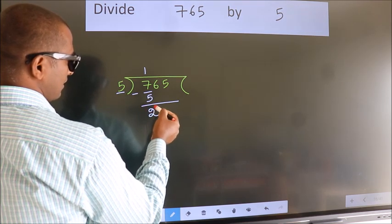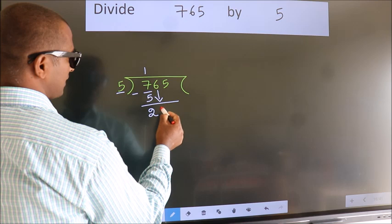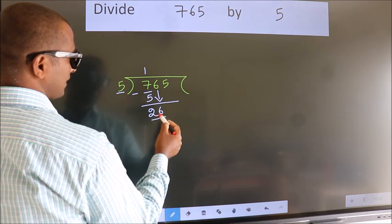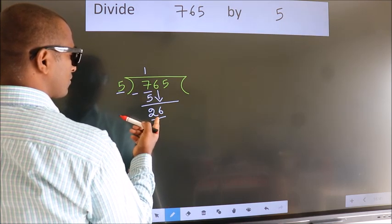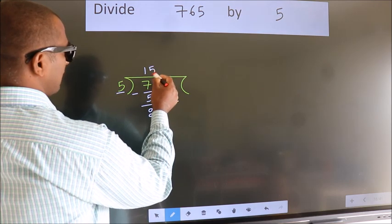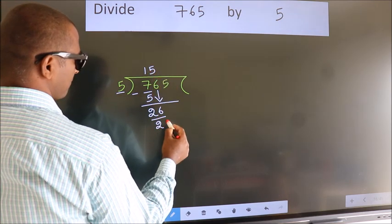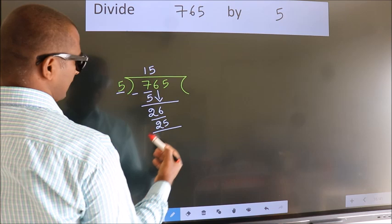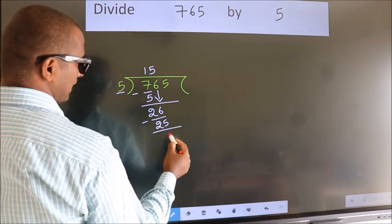After this, bring down the beside number. So, 6 down. So, 26. A number close to 26 in the 5 table is 5 fives, 25. Now, we subtract. We get 1.